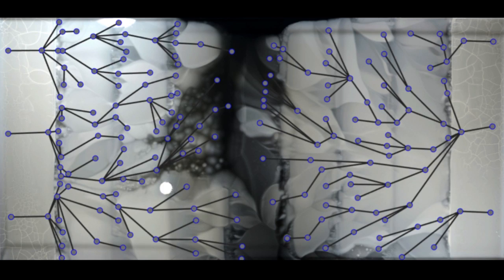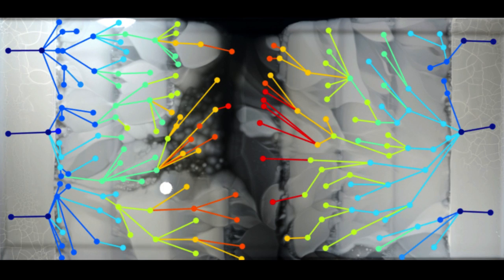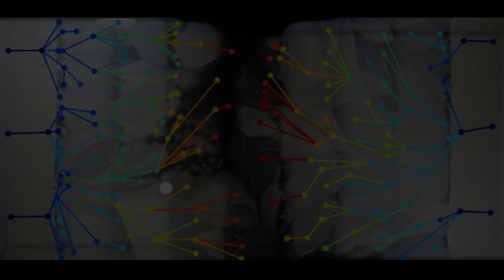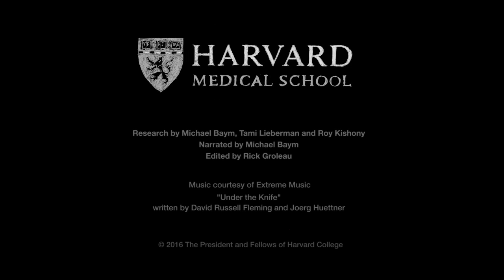And so we can see by this process of accumulating successive mutations that bacteria, which are normally sensitive to an antibiotic, can evolve resistance to extremely high concentrations in a short period of time.